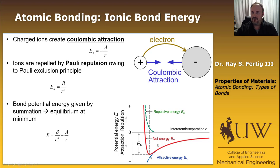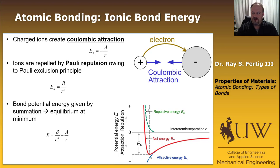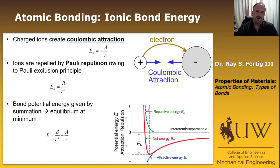That asymmetry is what gives us the thermal expansion we observe in materials. The attractive component is due to Coulombic attraction, and the steep repulsive portion of the curve is due to Pauli exclusion — that's how we get the bond energy curves from an ionic bond. One thing to mention about ionic bonds is that they're typically not strongly direction dependent. They are relatively well described just by the distance between the atoms, without a preference for directionality — in contrast to the covalent bonds we're about to discuss.